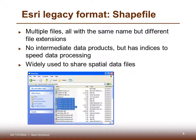Another legacy format is the shapefile. Multiple files may be shapefiles, all with the same name but different file extensions. There are no intermediate data products, but they have indices to speed up data processing. They are widely used to share spatial data files. All six of these different files need to be present in order to make use of a shapefile. The main shapefile itself has the .shp extension.